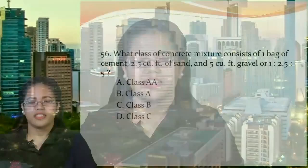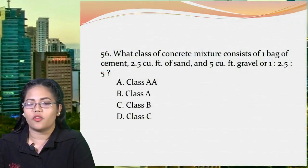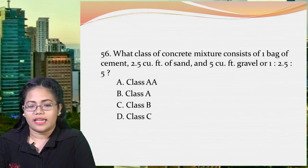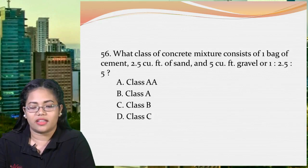Let's start. For our first question: what class of concrete mixture consists of 1 bag of cement, 2.5 cubic feet of sand, and 5 cubic feet gravel — or 1 is to 2.5 is to 5? Option A: class AA, B: class A, C: class B, and letter D: class C.